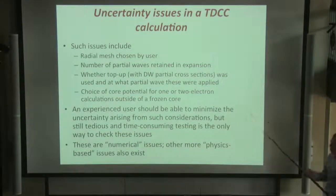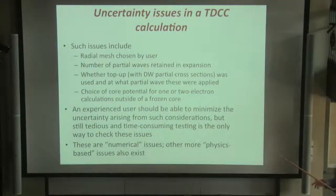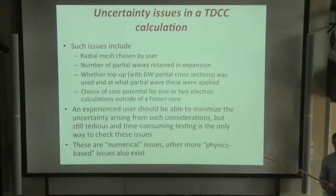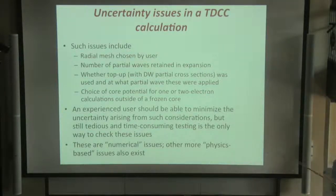An important numerical issue is the choice of core potential for quasi-one or two electron calculations — for example, electron-impact ionisation of sodium or magnesium, where one has a frozen neon-like core and must represent it as a spherical potential. An experienced user should be able to minimise these uncertainties, although time-consuming testing is really the only way to check these issues, and this is something that should be discussed more in publications.